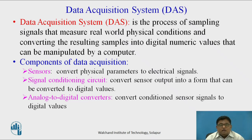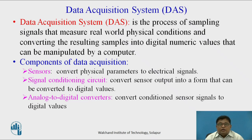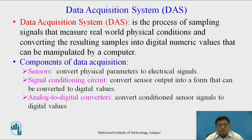Sensors are used to convert physical parameters like temperature and pressure into electrical signals. Signal conditioning circuits convert the sensor output into a form that can be converted to digital values. The analog-to-digital converter is used to convert the conditioned sensor signal into a digital value, which can then be transferred to the controller for further processing.